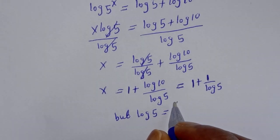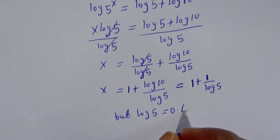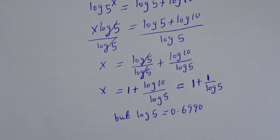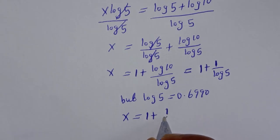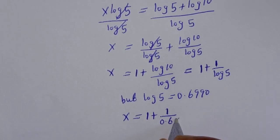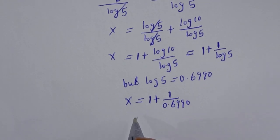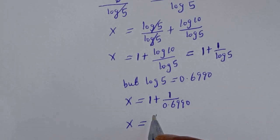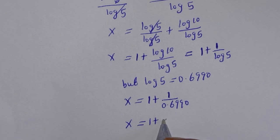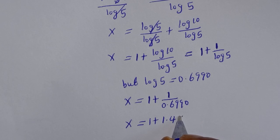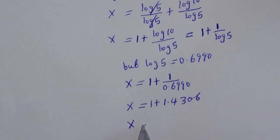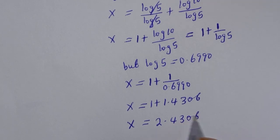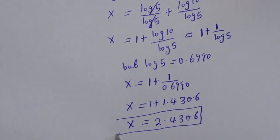Since log 10 equals 1, we have s equal to 1 plus 1 over log 5. Log 5 is equal to 0.6990, so s equals 1 plus 1 divided by 0.6990, which gives s equal to 1 plus 1.4306, and therefore s is equal to 2.4306. This is the final answer.